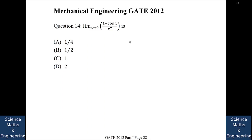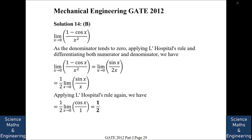The limit as x→0 of (1 − cos x)/x² is evaluated. The answer is B: 1/2. Since the denominator tends to 0, we apply L'Hôpital's rule and differentiate both numerator and denominator. First application gives sin x / 2x, which is still 0/0 at x = 0. Applying L'Hôpital's rule again gives cos x / 2. As x→0, cos 0 = 1, so the limit is 1/2.